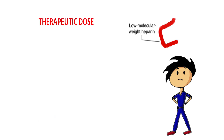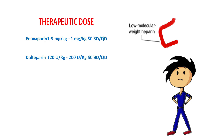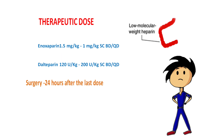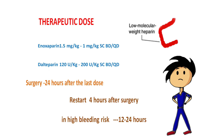If the patient is taking low molecular weight heparin at a therapeutic dose — i.e., enoxaparin 1–1.5 mg per kg body weight, or dalteparin 120–200 units per kg body weight — surgery should be done 24 hours after the last dose. It can be restarted 4 hours after the procedure, but in high bleeding risk patients we might have to wait 12–24 hours.